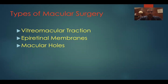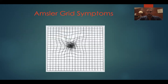Let's start with macular surgery and talk about the different types and diagnoses we treat. They really include three different categories: vitromacular traction, epiretinal membranes, and macular holes. For all of these conditions, the Amsler Grid is a very good tool to determine what a patient's symptoms are. In all three conditions, patients are going to notice some degree of distortion or metamorphopsia, as we can see on the Amsler Grid. There are also varying degrees of a central blind spot or central scotoma — in the case of a macular hole, it actually becomes a full central scotoma.